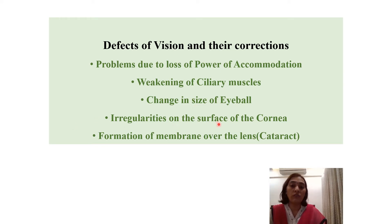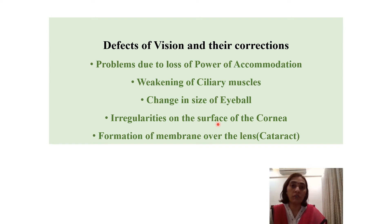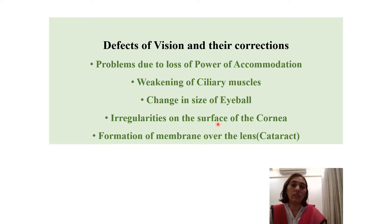Irregularities on the surface of the cornea. The cornea is the outermost part of the eyeball — a transparent, very thin membrane responsible for maximum refraction of light — and it has a perfect spherical shape. If there are irregularities and the curvature is not smooth, it introduces disorders.